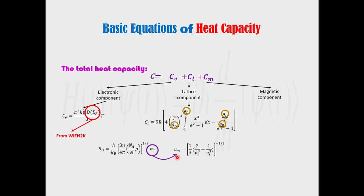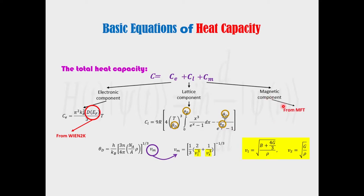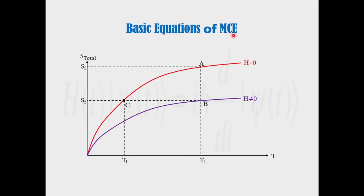The mean velocity of the wave can be obtained in terms of the longitudinal and transverse speed of the wave, which in turn can be calculated from the bulk and shear modulus obtained from the IRelast code implemented in WIEN2k. Finally, the magnetic moment can be calculated from mean field theory.